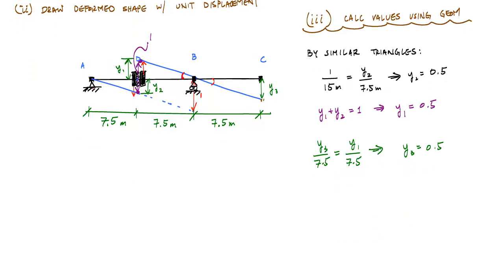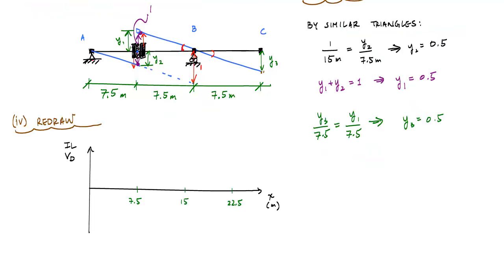Now I can go ahead and redraw my influence line on a nice graph. So there's my influence line for VD.